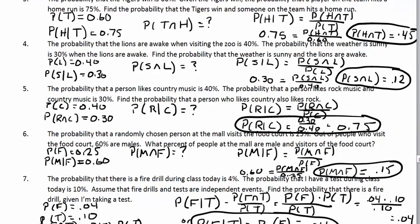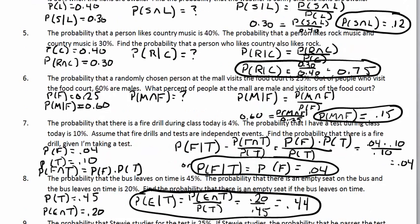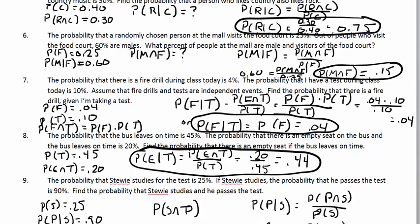Number seven: find P(F|T) — probability of a fire drill given I'm taking a test. Since the events are independent, P(F) × P(T) / P(T) = P(F) = 0.04. Number eight: find P(E|T) — probability there's an empty seat if the bus leaves on time. P(E and T) = 0.20, P(T) = 0.45. Divide to get approximately 0.44.